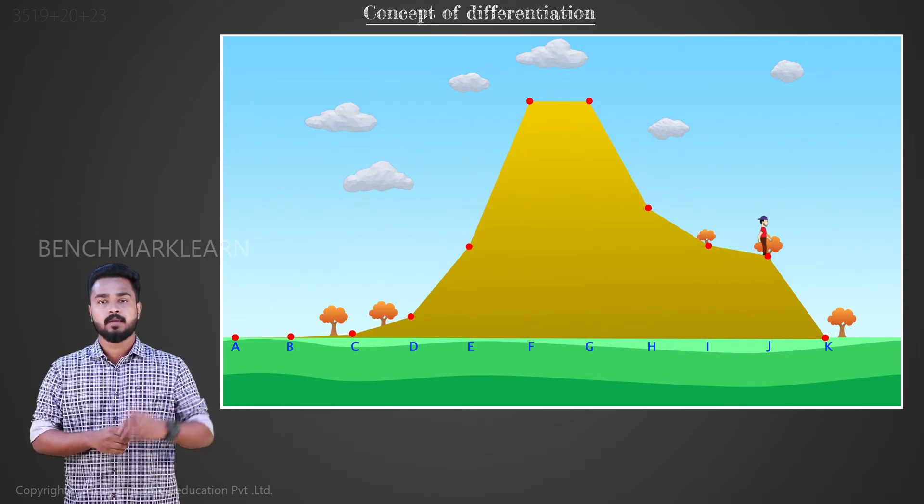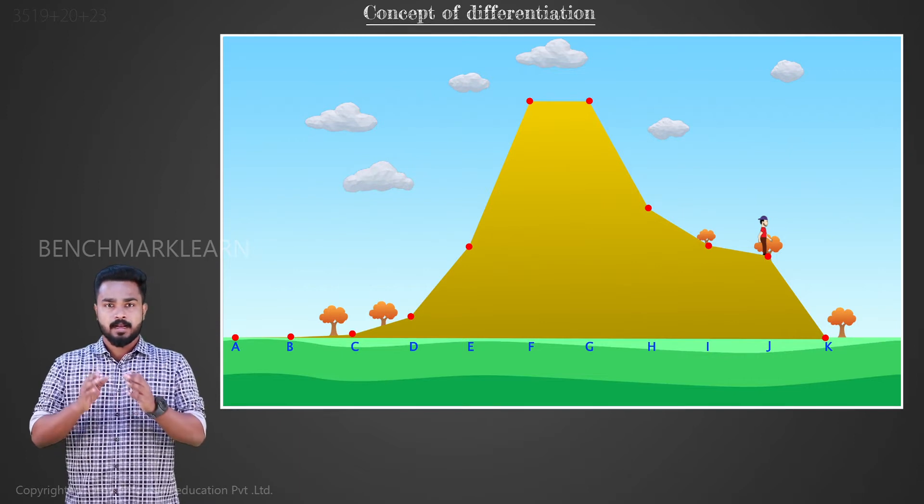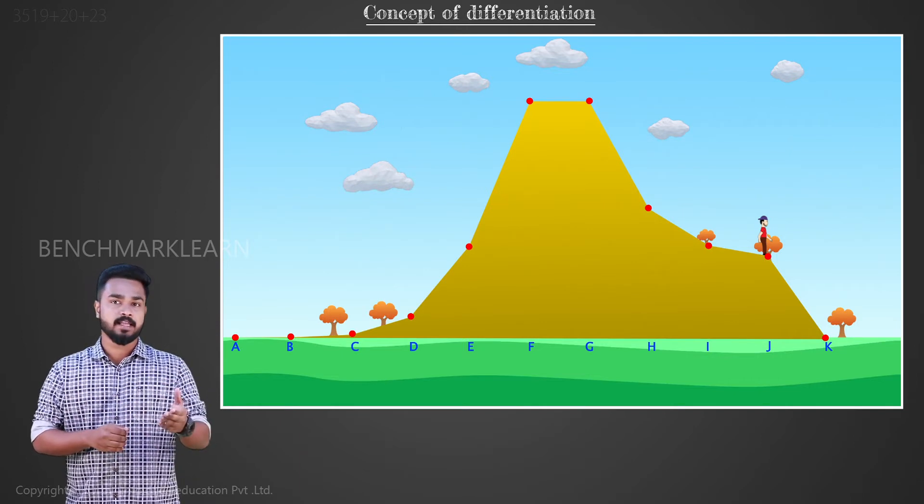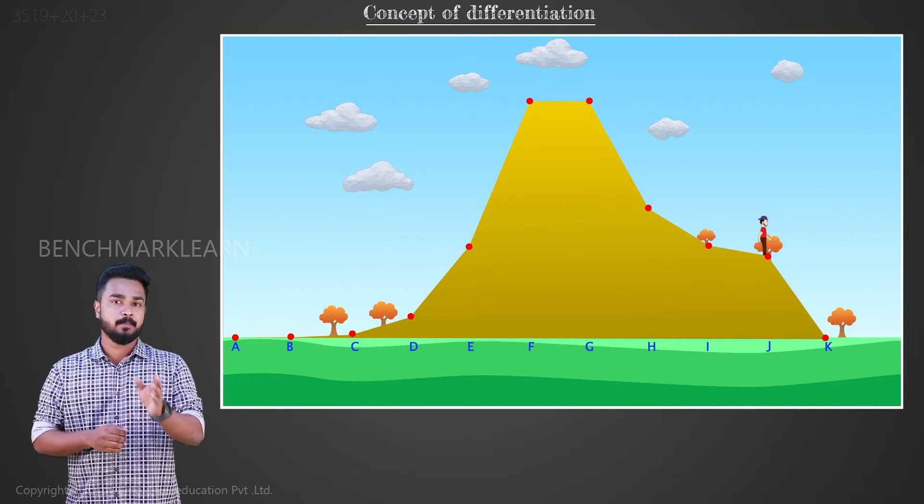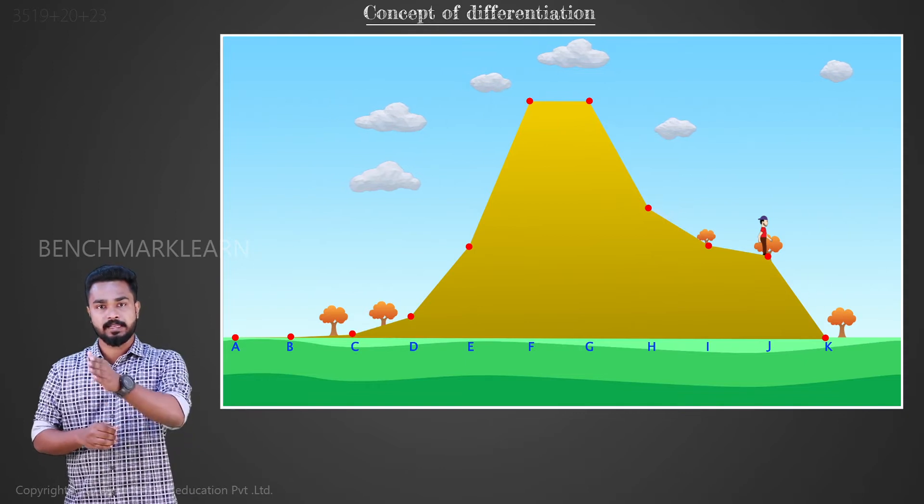Hope that you are clear with the concept of slope and rate of change. Now in reality, the slope of the hill does not vary abruptly from a particular point. Instead, it follows a gradual variation.